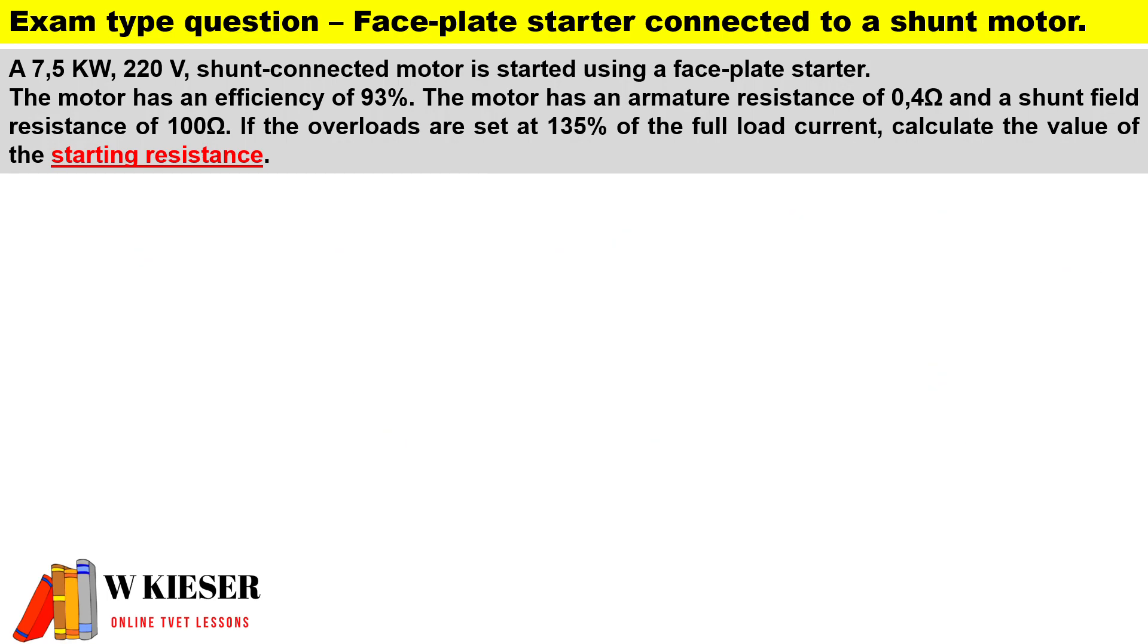The first thing to do is calculate the armature current. For a shunt motor, it'll be I_L minus I_shunt. To calculate the supply current, it's going to be power over voltage, and for a motor we always use input power. To calculate the shunt current, it's V over R_shunt.